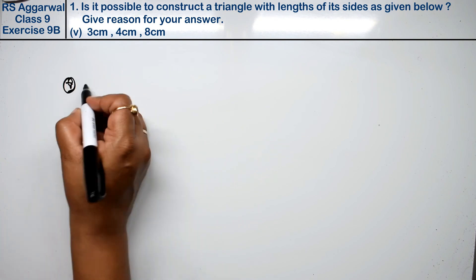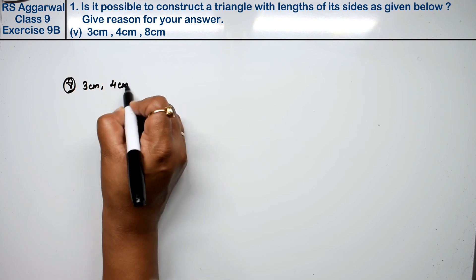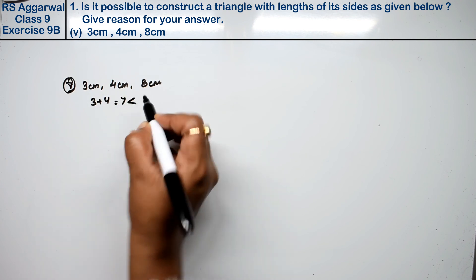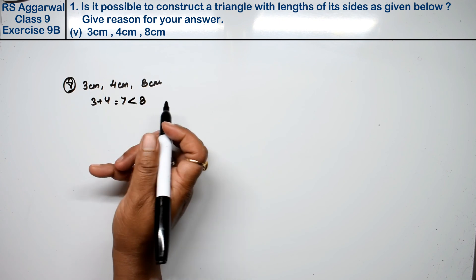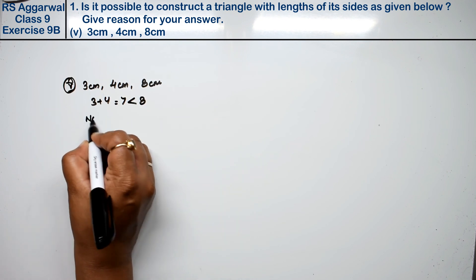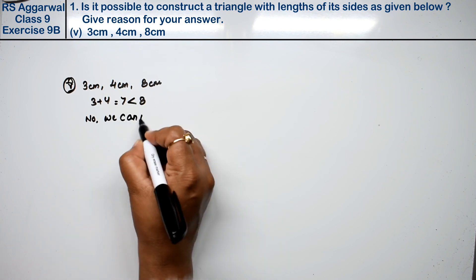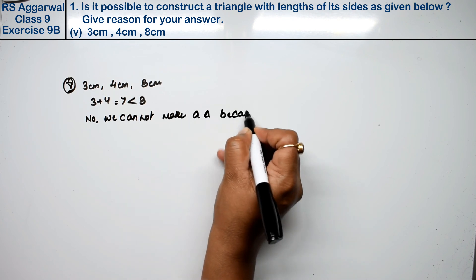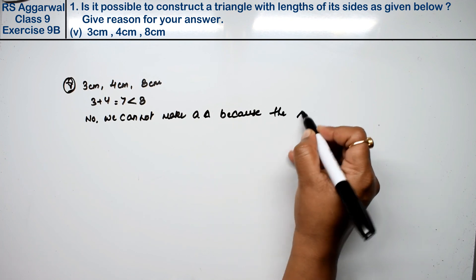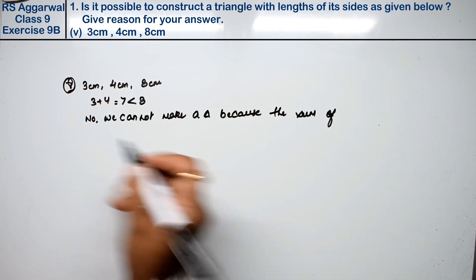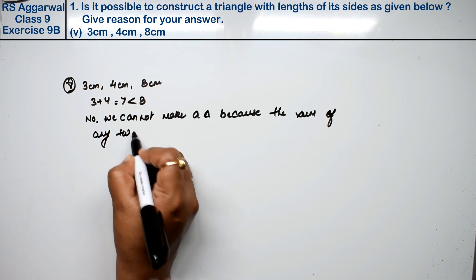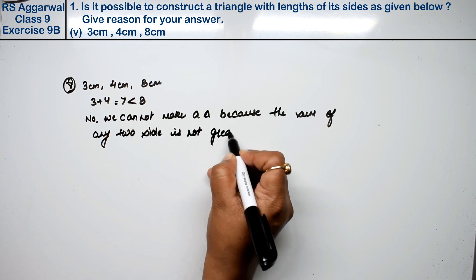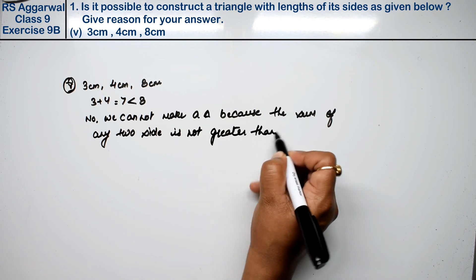Fifth part: the sides are 3 cm, 4 cm, and 8 cm. Here, 3 plus 4 is 7, which is not greater than 8. So no — we cannot make a triangle, because the sum of any two sides is not greater than the third side.